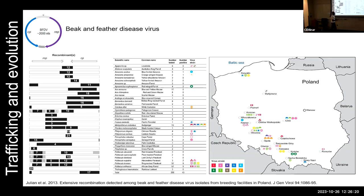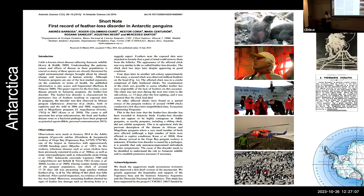Breeding facilities present serious challenges: animals are trafficked legally and illegally from around the world, arrive stressed, and are mixed in aviaries — creating a perfect mixing vessel for viruses. When these viruses recombine rapidly, we can see genomes that are 70% recombinant — essentially de novo synthesized through recombination. We see these recombinant viruses infecting multiple different parrot species within breeding facilities.